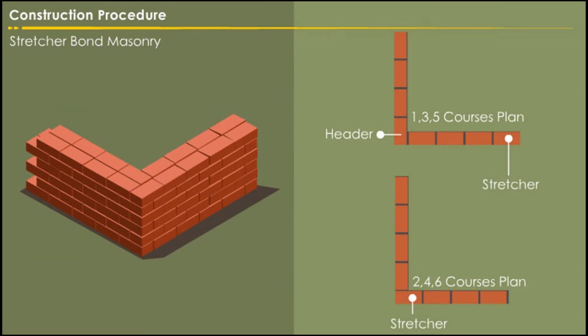In stretcher bond masonry, all the bricks are arranged in stretcher courses. However, care should be taken to break the vertical joints. Originally, it was used for half brick thickness walls.